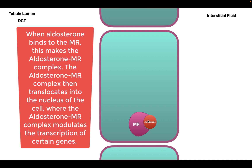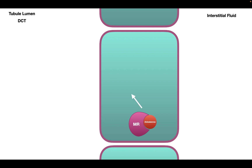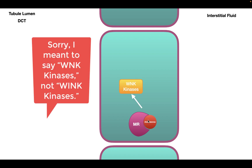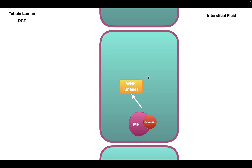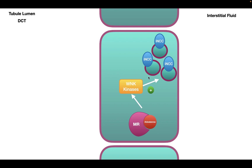After aldosterone binds to the mineralocorticoid receptor, this causes an increase in the transcription of specific mRNA that codes for the WNK kinases. So aldosterone binding increases mRNA transcription and therefore increases the translation of the WNK kinase proteins. The WNK kinases have two effects. The first is the implantation of sodium chloride co-transporters into the apical membrane — in other words, it increases the number of sodium chloride co-transporters in the apical membrane.